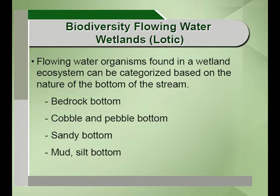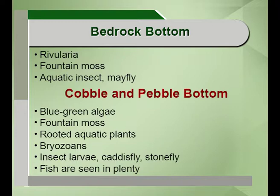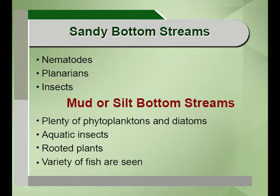The bedrock bottom mostly comprises fountain moss, aquatic insects and Rivularia. Cobble and pebble bottom involves blue-green algae, fountain moss, bryozoans, fishes in plenty, insect larvae, caddisfly, stonefly and rooted aquatic plants. In sandy bottoms, nematodes, roundworms, planarians and insects can thrive. The mud and silt bottom contains plenty of phytoplankton, diatoms and shelled organisms, while aquatic insects, rooted plants and a variety of fish are also able to thrive in such muddy bottom streams.